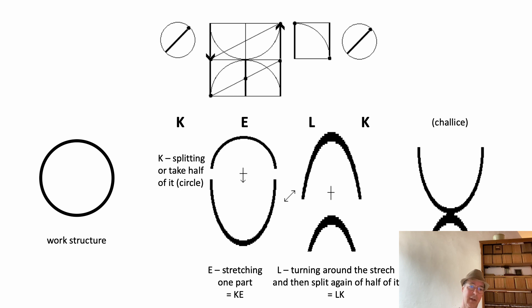So you have the K, the E, the L and the K. The KELK is a Dutch word. It means chalice. I use the work structure. The work structure is because of the K split in half. And what happens with the E, it will be stretched only in one part. So it will get this form. So one of the two forms is stretched. So you get the K, that is the result, K.